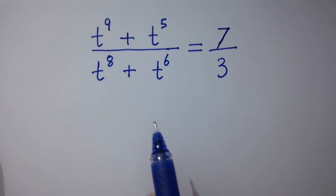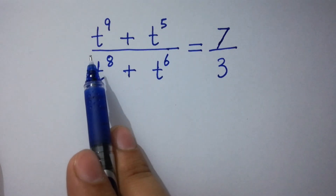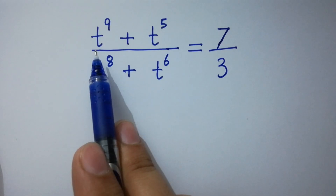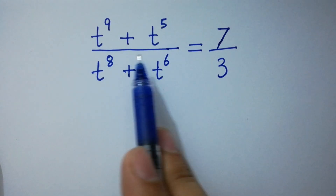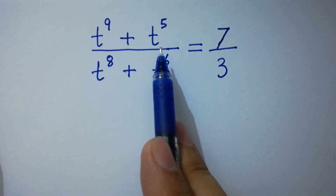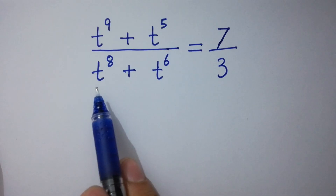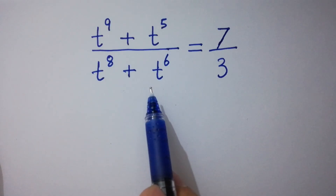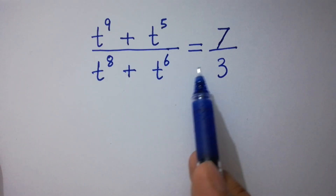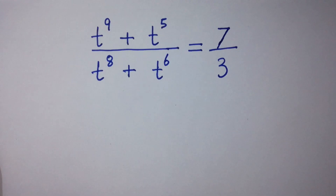Hello friends. Find the value of t if t to the power 9 plus t to the power 5, over t to the power 8 plus t to the power 6, equals 7 over 3.